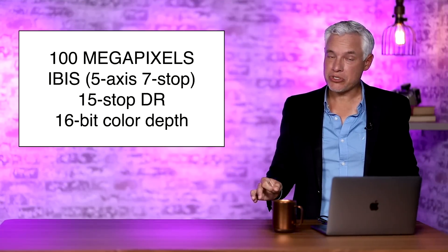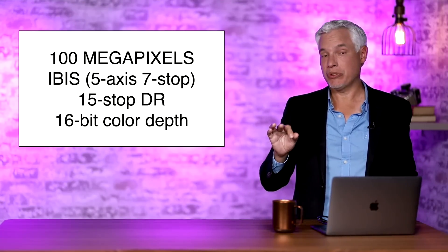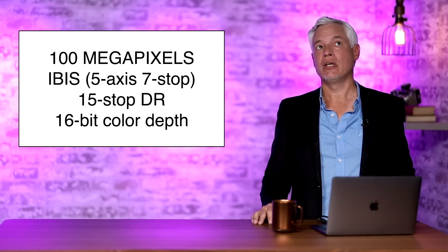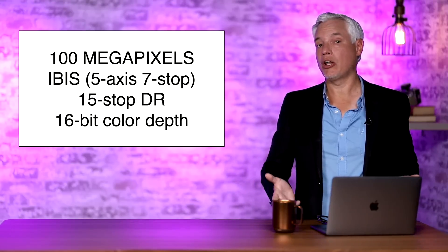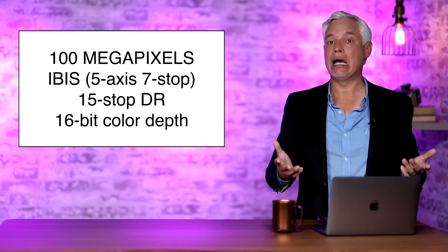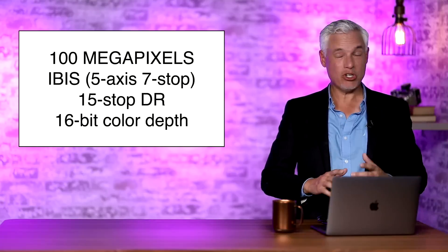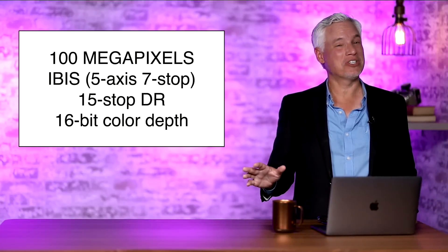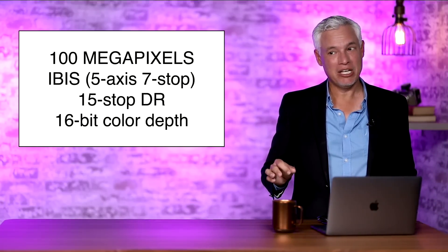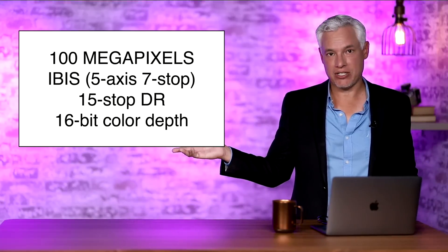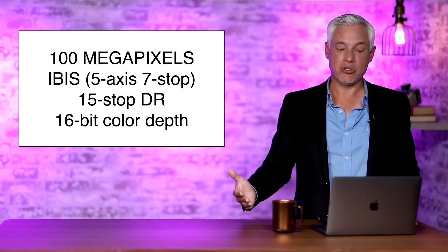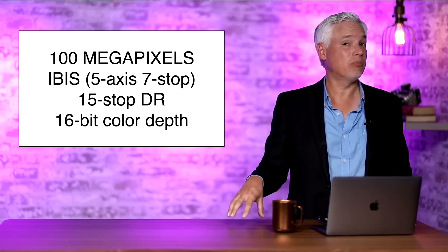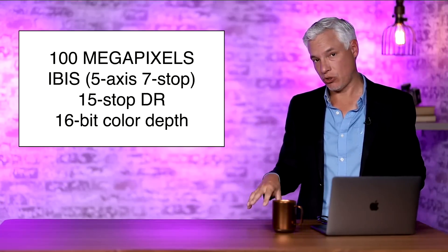This camera will have sensor stabilization, 5-axis, up to a 7-stop improvement. And that is absolutely critical. Not having IBIS would be a deal breaker because with the 100 megapixels, any amount of camera shake would be immediately apparent. There is no reciprocal rule when using a 100 megapixel camera. You'd have to be shooting like five, six stops over the reciprocal rule to get reliably sharp shots. So that IBIS will actually improve the overall detail maybe more than just the megapixels alone will.